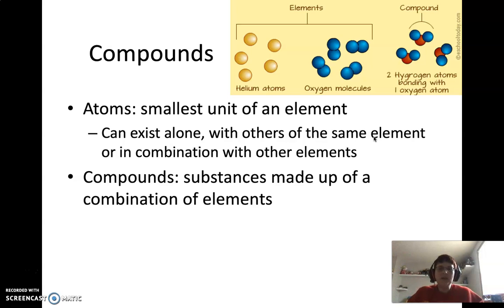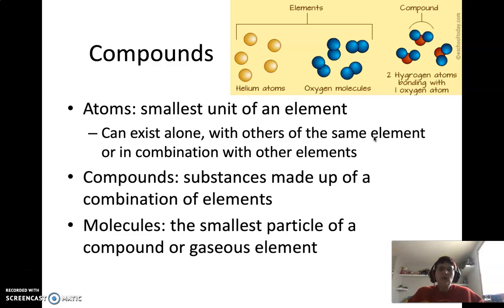The last term that we come across commonly is molecules, and molecules are just the smallest particle of a compound or a gas element. So for all of the gas elements except for the noble gases, they are going to be made up of molecules, because they're going to come in sets. Helium and the other noble gases, like neon and so forth, can travel as single atoms, but the other gases are going to have to travel in sets, whether it's two or three atoms bound together. So those are molecules.